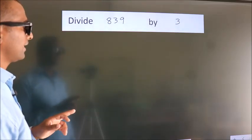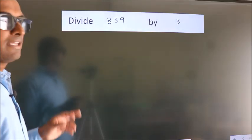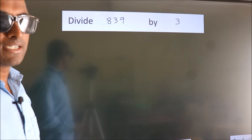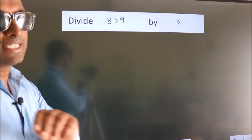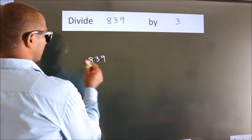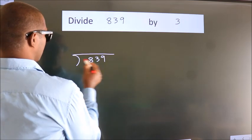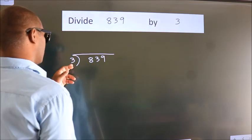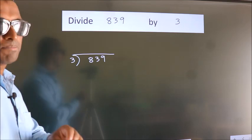Divide 839 by 3. To do this division, we should frame it in this way. 839 here, 3 here. This is your step 1.